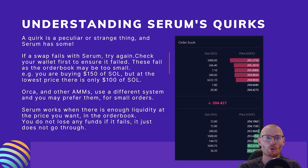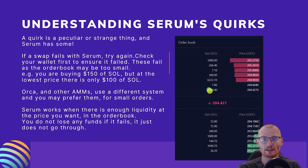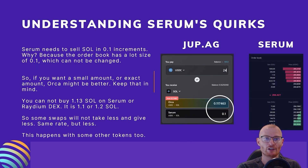Understanding Serum's quirks. A quirk is a peculiar or strange thing, and Serum has some. If a swap fails with Serum, try again. Check your wallet first to ensure it failed. These fail because the order book may be too small — for example, you are buying $150 of SOL, but at the lowest price there is only $100 of SOL available. Orca and other AMMs use a different system and you may prefer them for small orders. Serum works when there is enough liquidity at the price you want in the order book. You do not lose any funds if it fails — it just does not go through. This is an example of an order book: this is the sell side and this is the buy side. You won't see any of that with Jupiter because it's all in the back end.